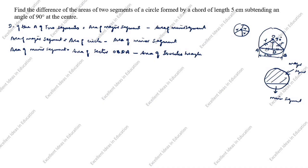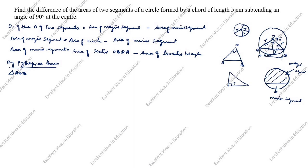By Pythagoras theorem, we will take triangle AOB. OA is R, OB is R, and AB is 5 centimeter. Pythagoras theorem: OA² + OB² = AB². So R² + R² = 5², which gives 2R² = 25. Therefore R² = 25/2.